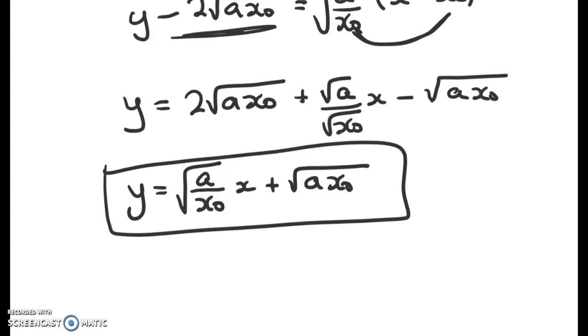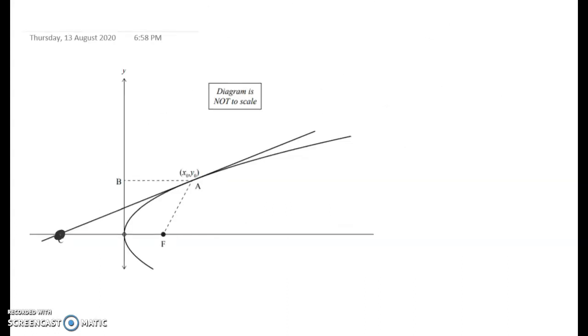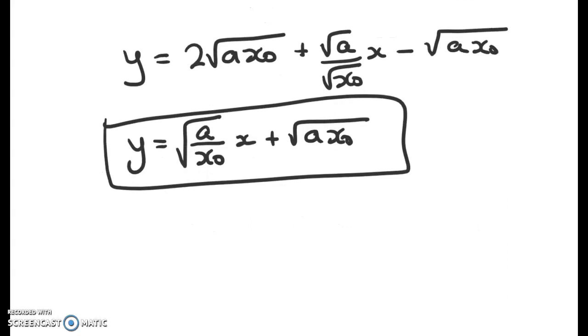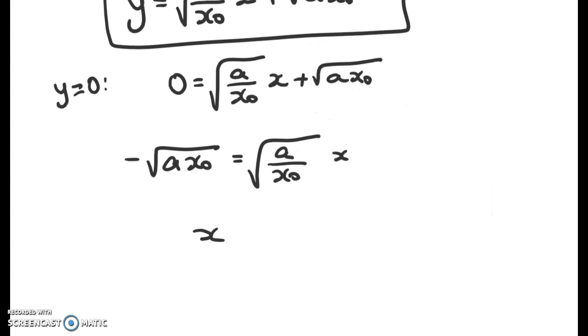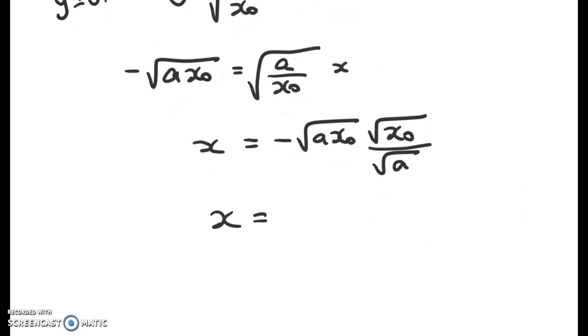So that's the equation of the line. Now what do we need from that? We need the coordinates of point C. Remember, this one here is (a, 0). So the coordinates of point C are going to happen when y equals 0, that's the x-intercept. So 0 equals this. Solving that gives me negative √(ax₀) equals this. So finally, x equals negative √ this times this over √a, and you can see that that cleans up to give me a very simple coordinate, which is the x value there is equal to negative x₀.